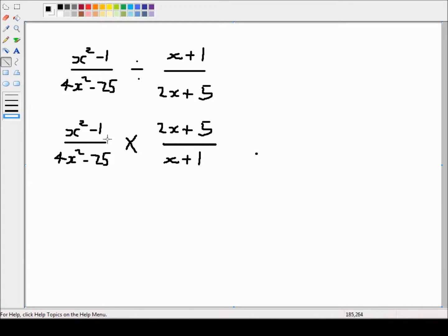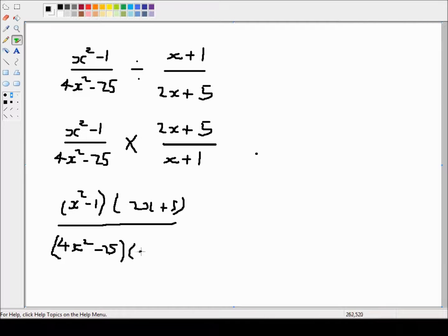And then it's just a straightforward multiplication. So this is x squared minus 1 times 2x plus 5, all over 4x squared minus 25 multiplied by x plus 1.